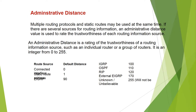Administrative distance: multiple routing protocols and static routes may be used at the same time. If there are several sources for routing information, an administrative distance value is used to rate the trustworthiness of each routing information source. An administrative distance is a rating of the trustworthiness of a routing information source, such as an individual router or a group of routers, on a scale of 0 to 255.